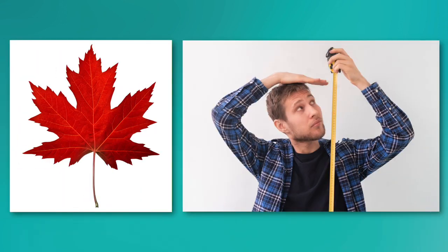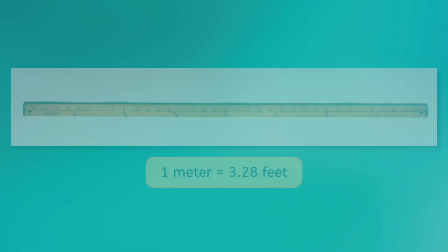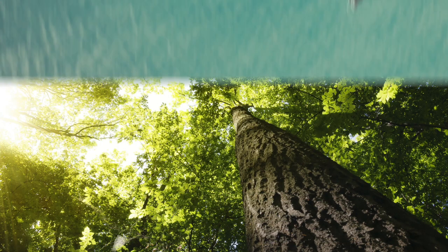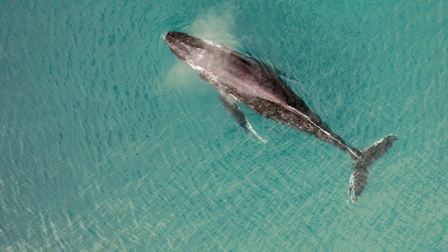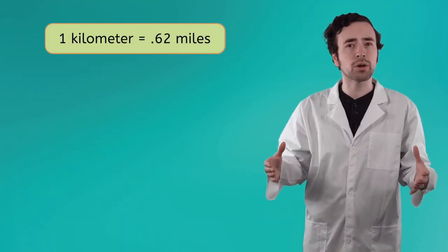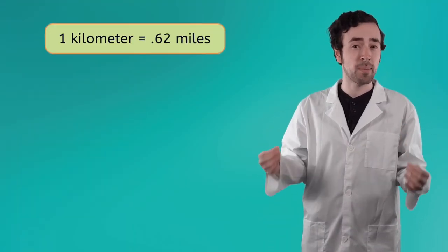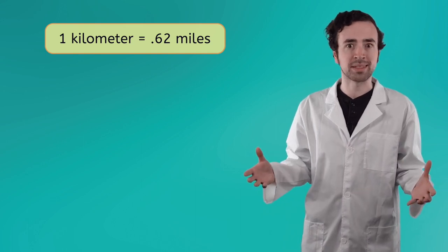A meter is a little over three feet, similar to a yard. Meters are ideal for measuring larger things like the height of a tree or the length of a whale. Finally, a kilometer is a little over half of a mile. That's what we use for the really big distances like the length of a river or the migration paths of animals traveling across continents.